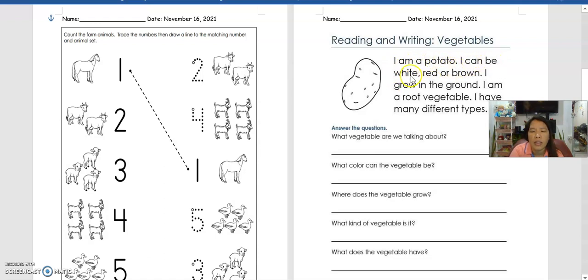I am a potato. I can be white, red, or brown. I grow in the ground. I am a root vegetable. I have many different types.